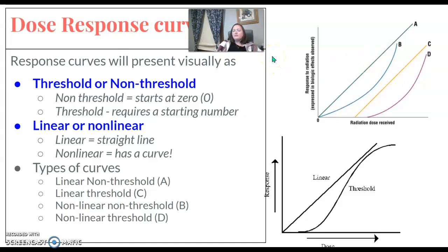Dose-response curves either have a threshold or are non-threshold. Non-threshold starts at zero, meaning any dose could see a response. A threshold has to start at a certain number - you have to have this much dose before you start to see the response. So the threshold starts further along the line.